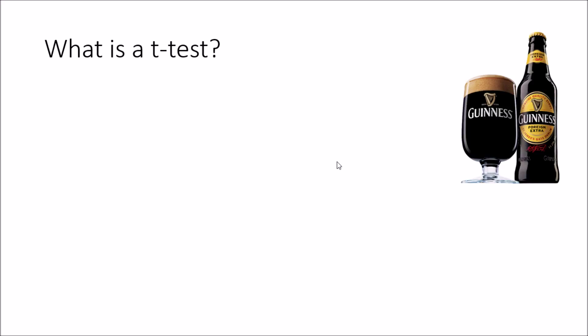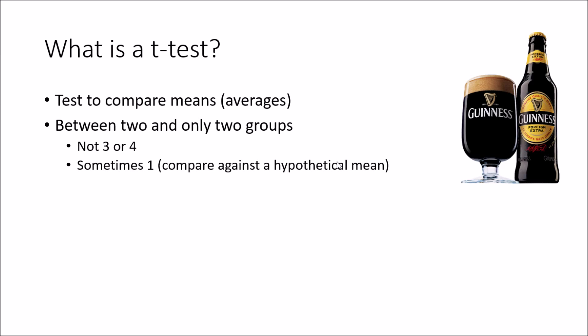Today we're going to be talking about t-tests. So first of all, what is a t-test? The t-test first came about from a Guinness brewery employee trying to devise a way to compare two batches of stout cheaply. He then published this work under the surname of Student. This test is only used when trying to compare the means, or the averages, between two and only two groups. We are determining if there is a significant difference between these two means.